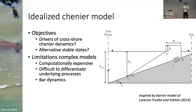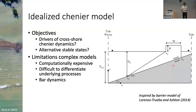Our reasoning for developing an idealized model instead of using existing process-based models like Delft 3D is that those models are computationally very expensive, and we wanted to model timescales from seconds to decades. Also, with so many processes involved, it's hard to differentiate which processes are actually driving the changes we see. And some processes are just not well resolved right now — an example is bar dynamics. Diffusion is known to generally flatten out bars, and we know that the chenier remains relatively steep.